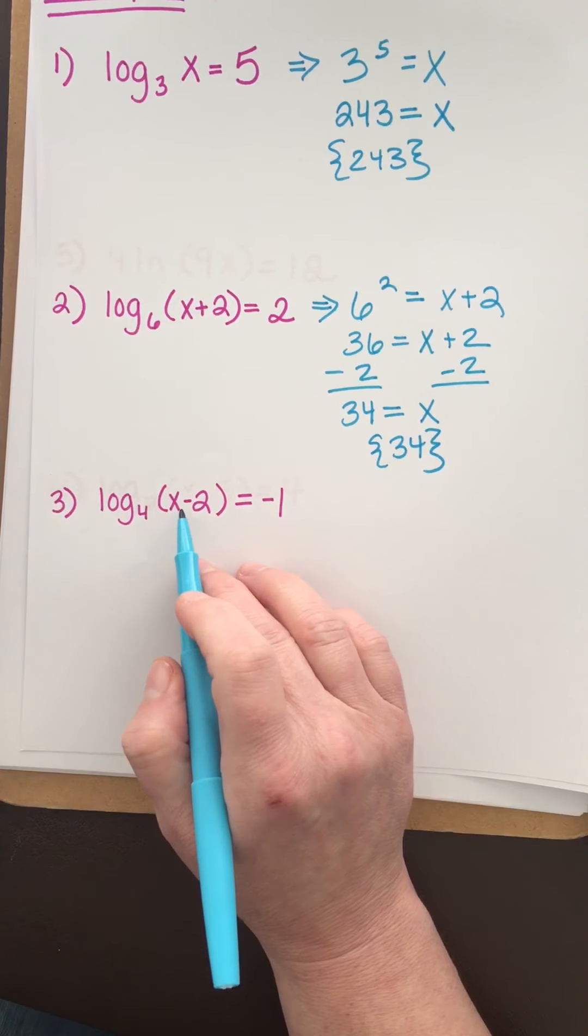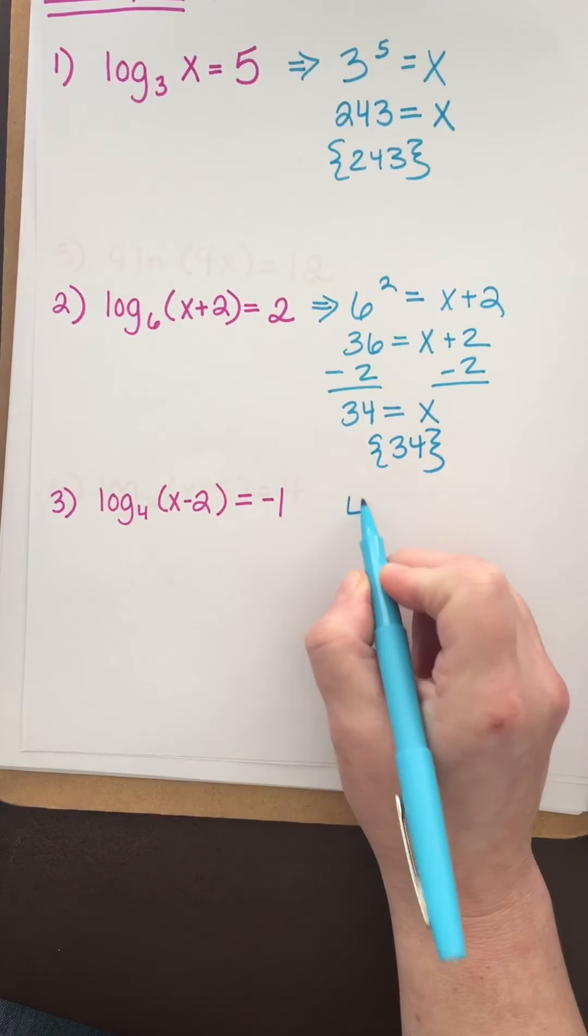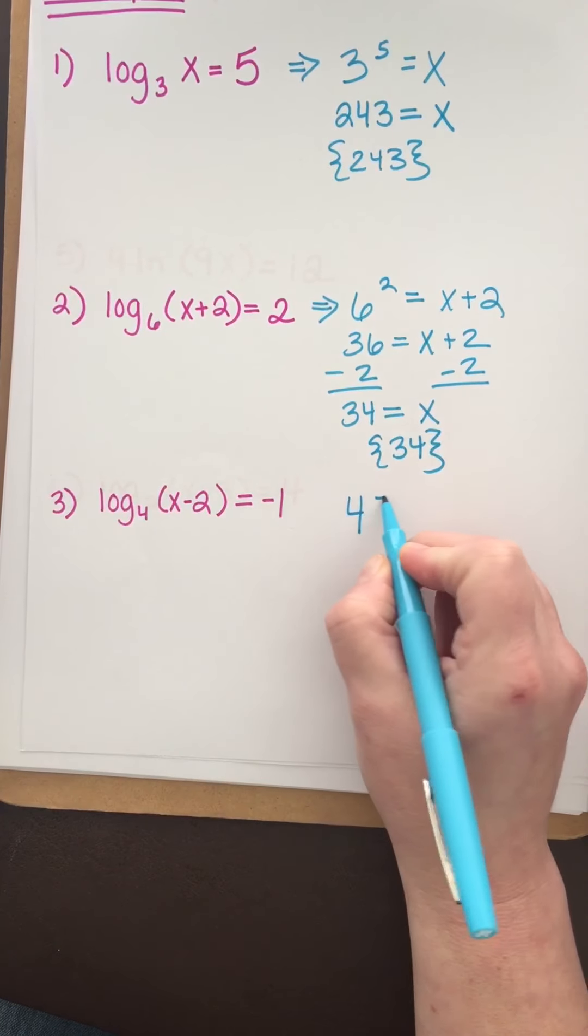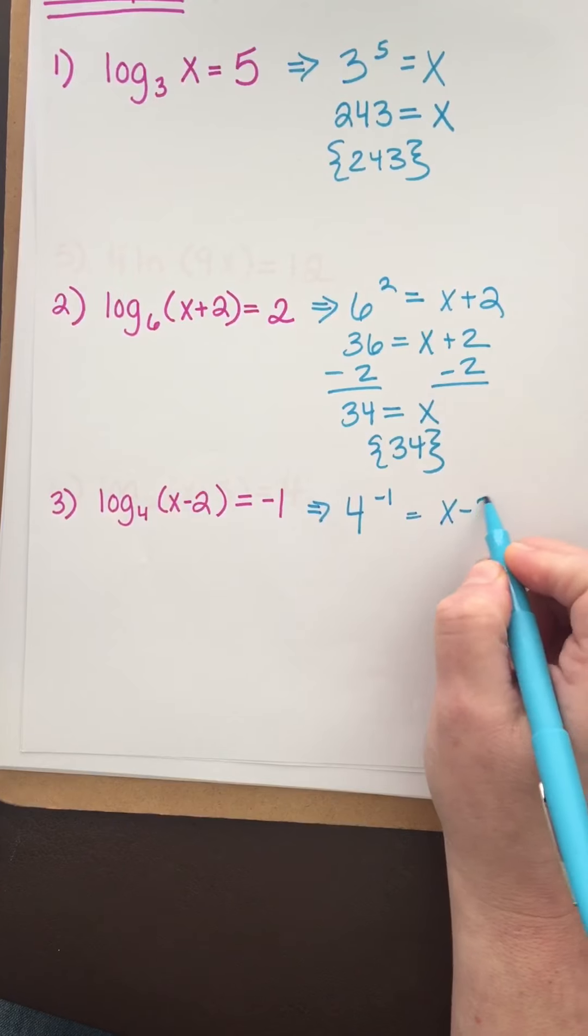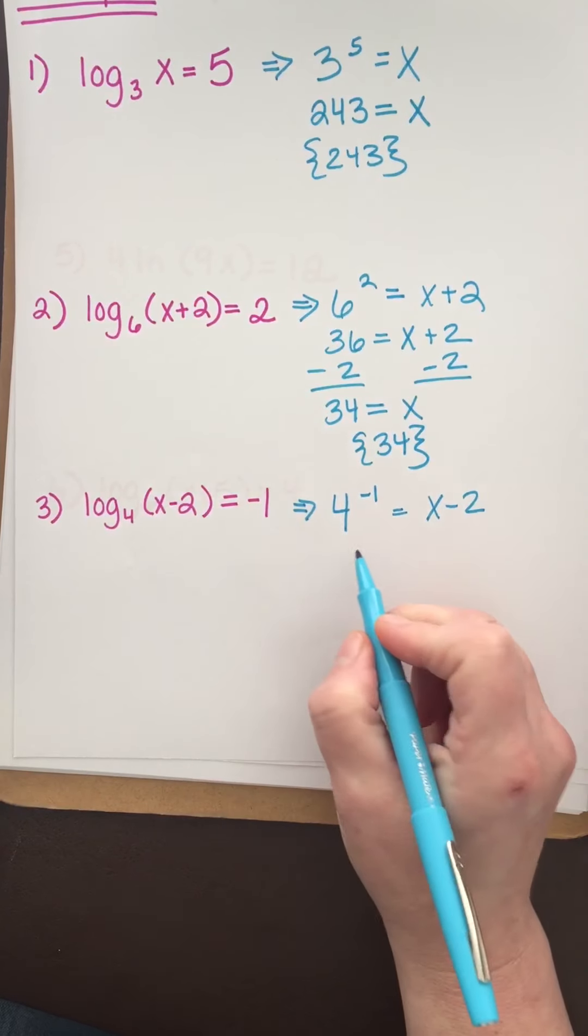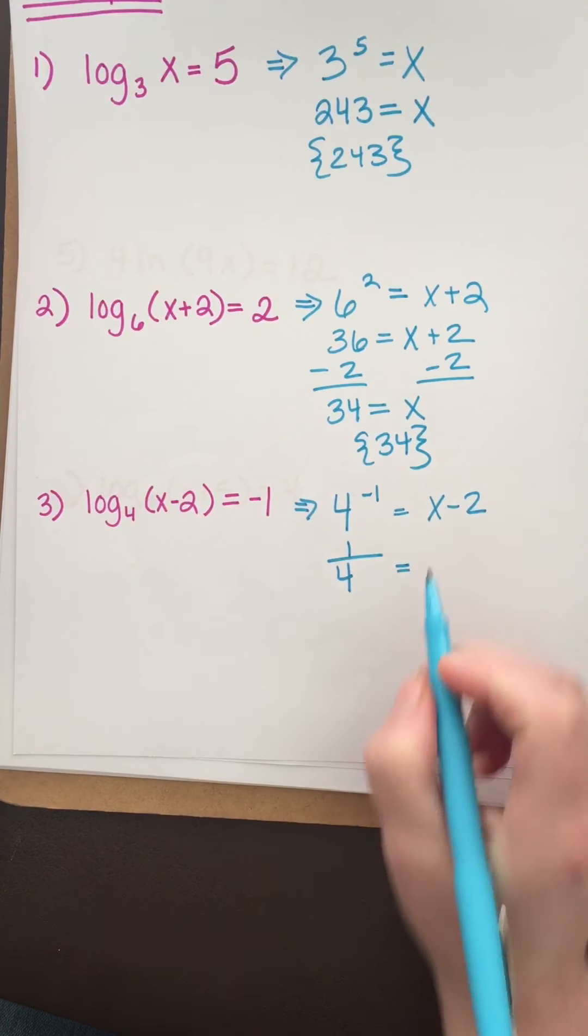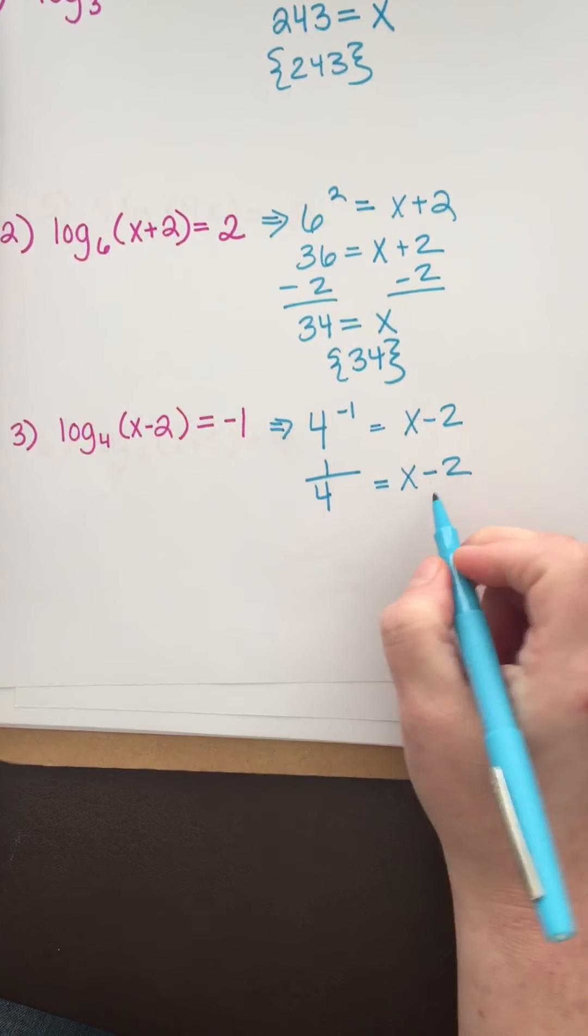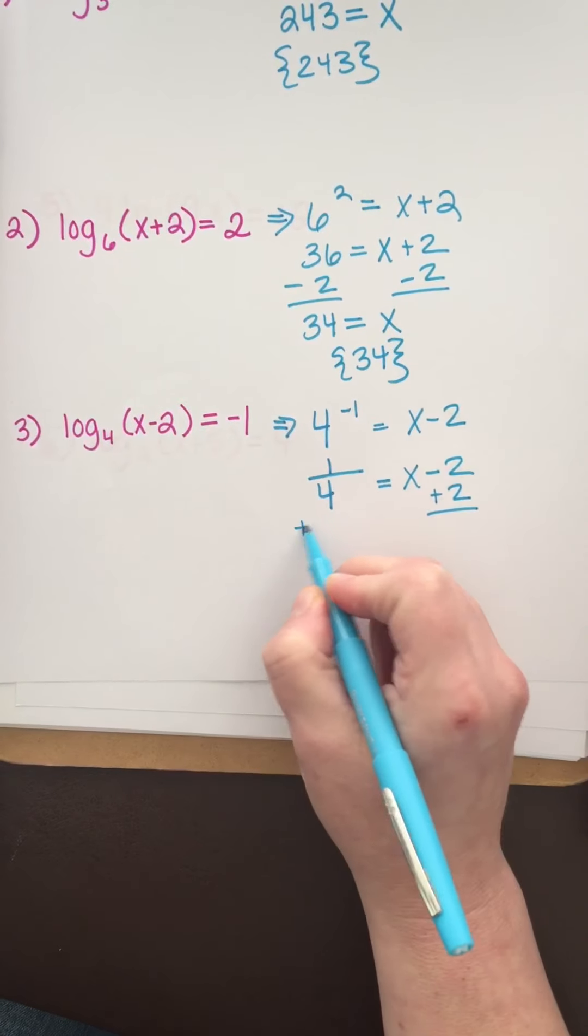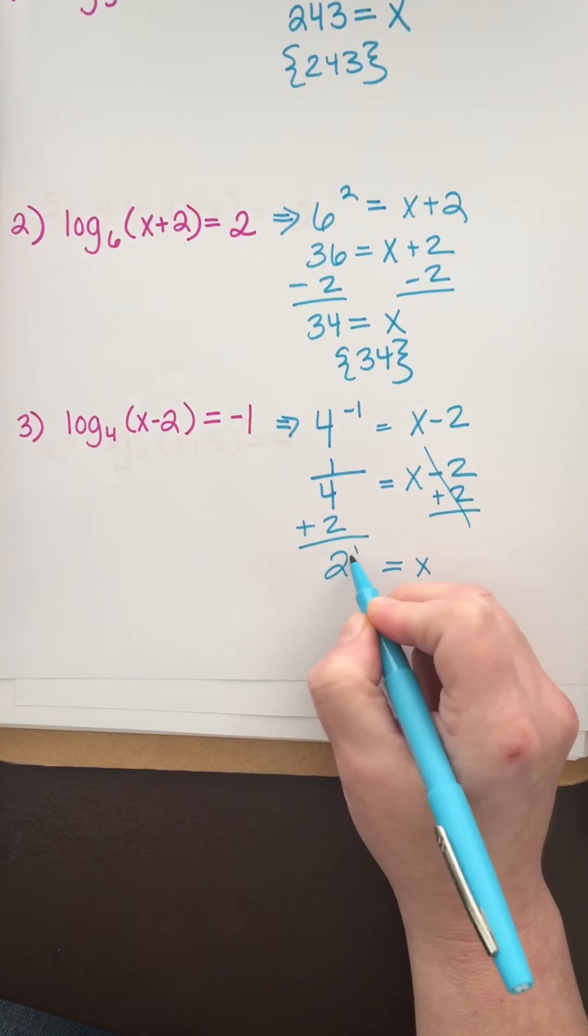We have log base 4 of (x minus 2) equals negative 1. This means 4 raised to the negative 1 equals x minus 2. To get rid of that negative exponent, I move it to the denominator, giving 1 over 4. To undo subtraction, we add 2 to both sides.